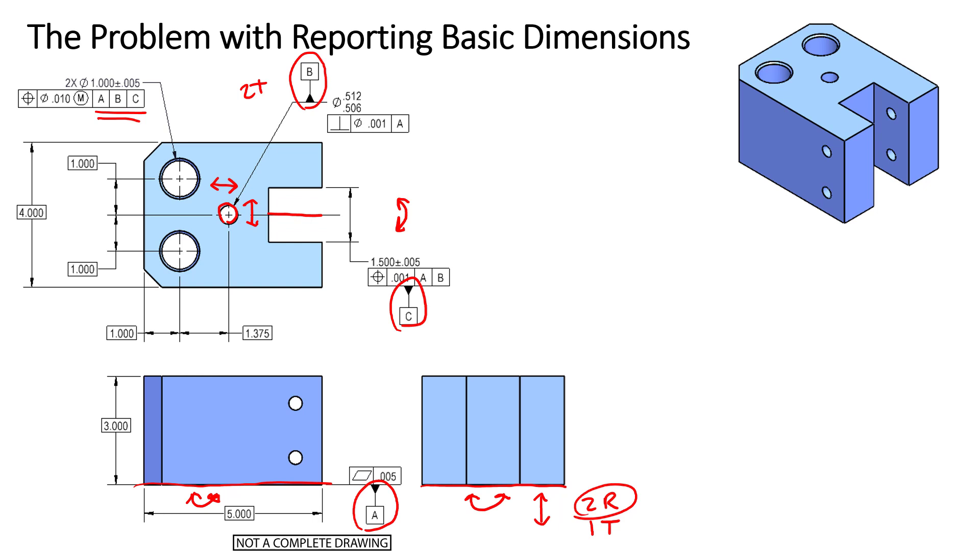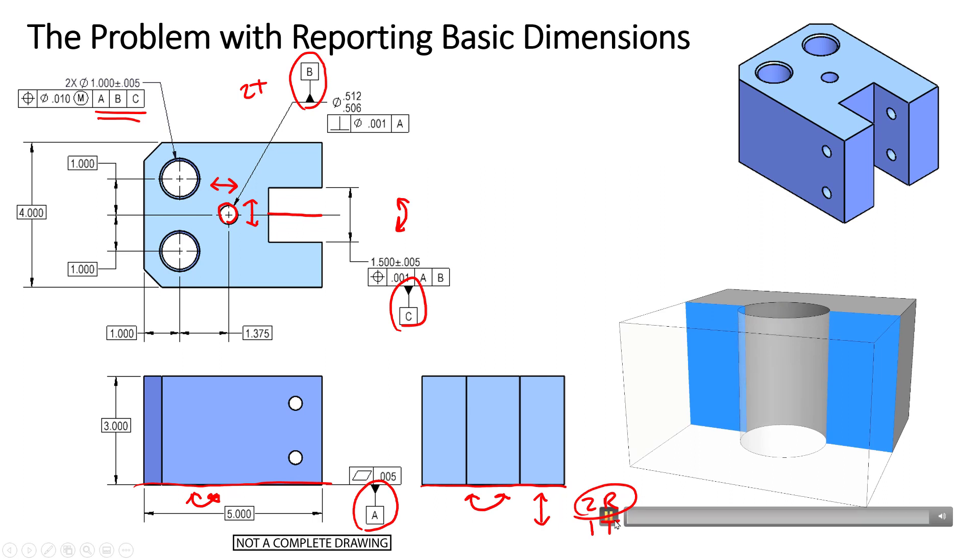Now we know that the position control can control all four components of SLOTH, which is size, location, orientation, and form. I brought in this animation here to show you all four components and how they affect a hole.